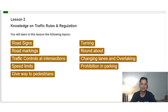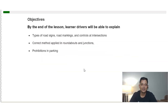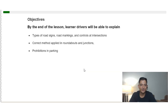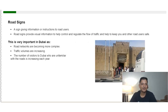Lesson two is on road regulations. In this chapter we will cover road signs, road markings, traffic control at intersections, speed limits, give way to pedestrians, turning, roundabouts, changing lanes and overtaking, as well as provisions in parking. The objective of this lesson is to learn about the different types of road signs, road markings, and traffic control at intersections, as well as the correct methods applied in roundabouts, junctions, and parking.